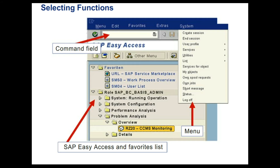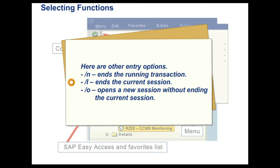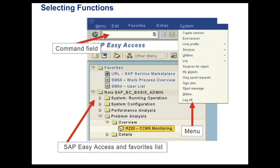Each function in SAP is carried out using a transaction code in the system. Here are other entry options: Slash N ends the running transaction. Slash L ends the current session. Slash O opens a new session without ending the current session. You can call the command field by using the keyboard also. The keyboard combination Control plus Tab makes the cursor move from the current input field to the next input field. You can use Tab to move within an input field group.